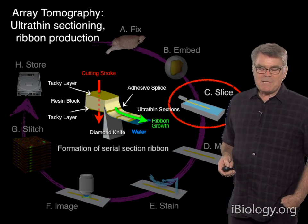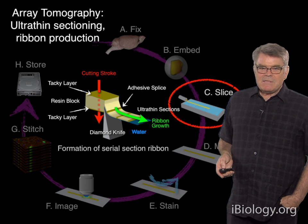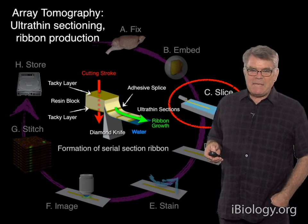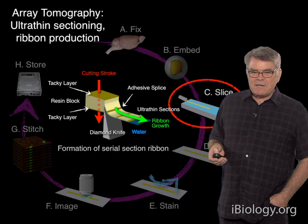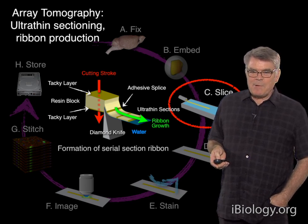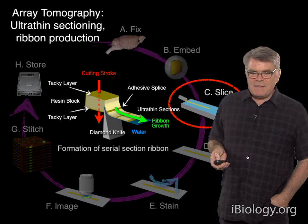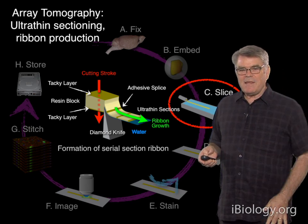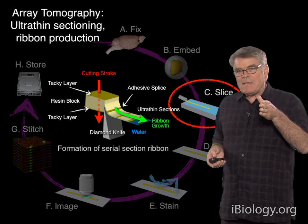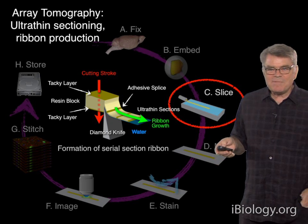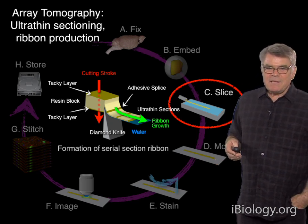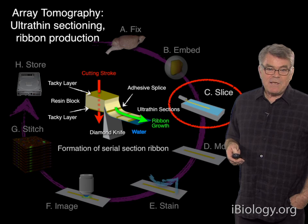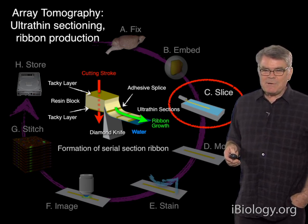Here's a little cartoon of what's going on. The resin block is very precisely stroked down over the very sharp diamond knife, peeling off the ultra-thin section. The sections glue themselves together to form the ribbon floating on the surface of the water, because a thin layer of tacky adhesive has been applied to the top and bottom of the block. With each new stroke of the cutting action, the leading edge of the section about to be cut is neatly spliced to the trailing edge of the preceding section. This trick has been around for decades and has been used by many electron microscopists for serial sectioning.